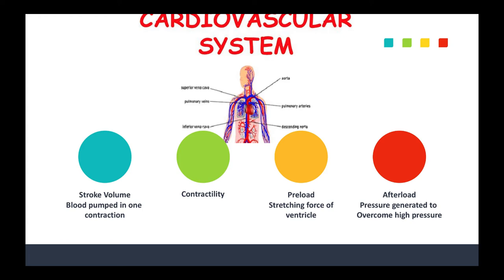Preload is the passive stretching force on the ventricle at the end of diastole. More blood returning from the body into the heart increases preload; less blood returning decreases it. If the container — the vessel — is bigger than the amount of fluid, like when you're losing blood, you'll have inadequate preload and a decrease in cardiac output. Drugs and cardiac conditions can also cause this, but here we're focusing on hemorrhage and shock.